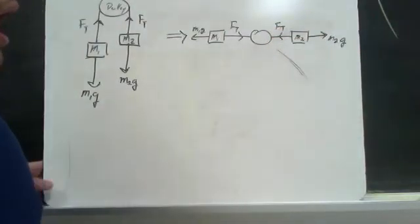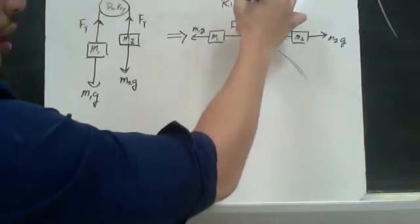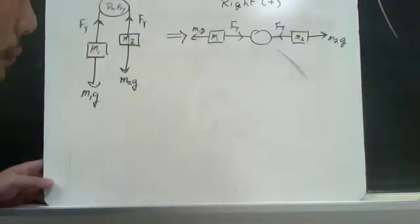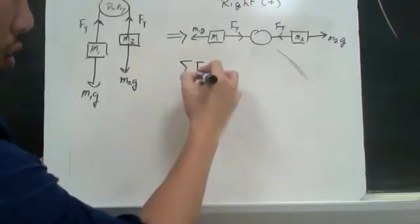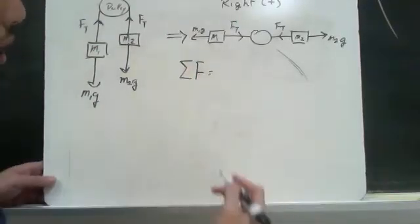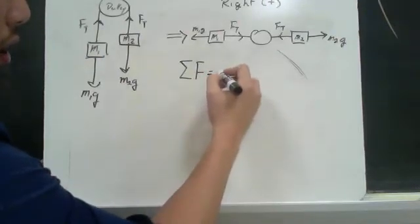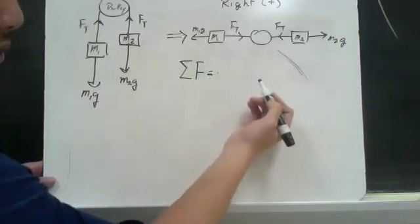Now, from there, I will designate anything going to the right as positive. So if I were to create my net force equation, it would look like this. So the sum of the forces is equal to the masses times the acceleration.